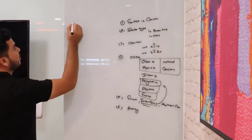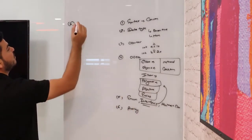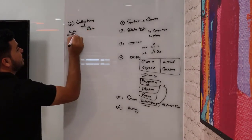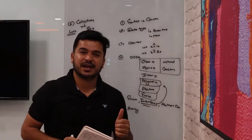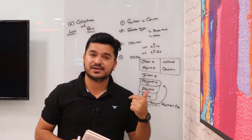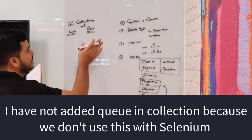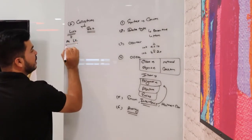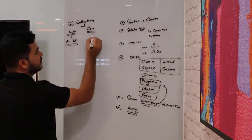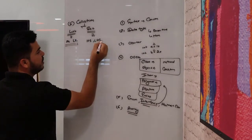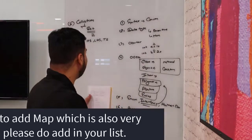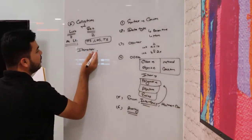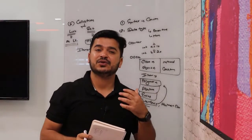Once you understand the limitations of arrays, you can start with collections. In collections we have List and Set. Inside List we have ArrayList and LinkedList. Inside Set we have HashSet, LinkedHashSet, and TreeSet — internally TreeSet uses SortedSet. Understanding array limitations lets you easily connect with ArrayList and LinkedList. During collections you will also use Iterator — understand how Iterator works, why it's required, and how to use it with List and Set.